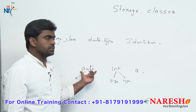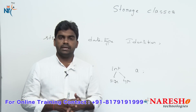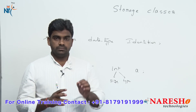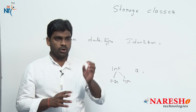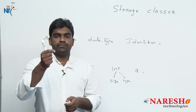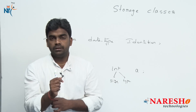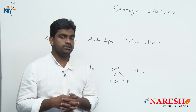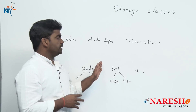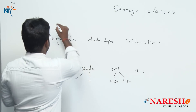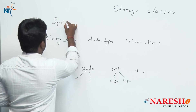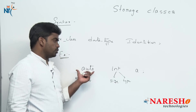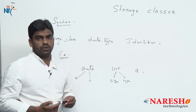Now the discussion is about storage classes. Suppose if we are not writing any storage class in the declaration of a variable, what will happen? Simply, according to the context or according to the area where we are declaring a variable, the compiler will assign one default storage class. This is the syntax of a storage class, and this is one example. One type of storage class is auto.